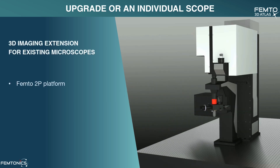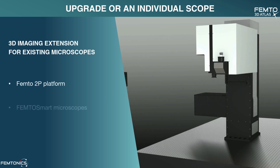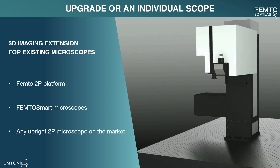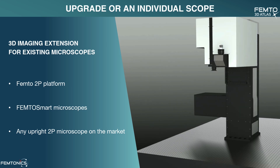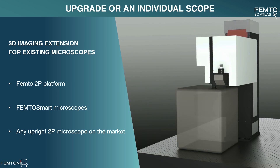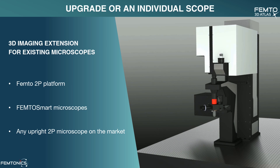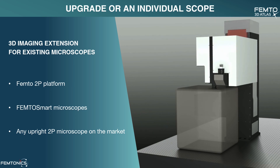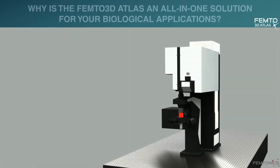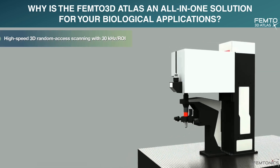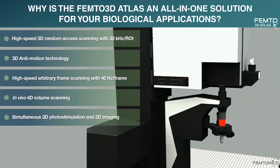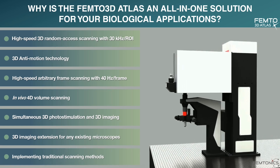One of our notable technological innovations is that the 3D acousto-optic technology is available not only as a standalone product with a 2P platform, but it can also serve as an upgrade to any FemtoSmart microscope or any upright 2P microscope from other providers as well. Our optical department will be happy to learn about your current system and design how it will be combined with Femto3D Atlas. Reaching the end of the presentation, let me highlight the advantages of 3D acousto-optical imaging and some of why Femto3D Atlas can be viewed as an all-in-one solution for your biological application.